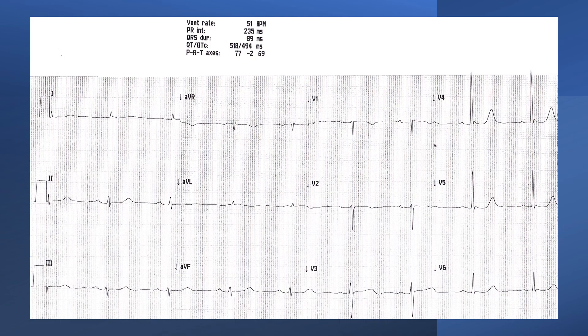She had thyroid functions added onto her bloods which confirmed the diagnosis of hypothyroidism. She was admitted for investigations for that, had thyroxine replacement, and she did well. That was an interesting case to share — learning how to apply the approach to interpret ECGs and to discuss the important differential diagnosis of low voltage ECG.